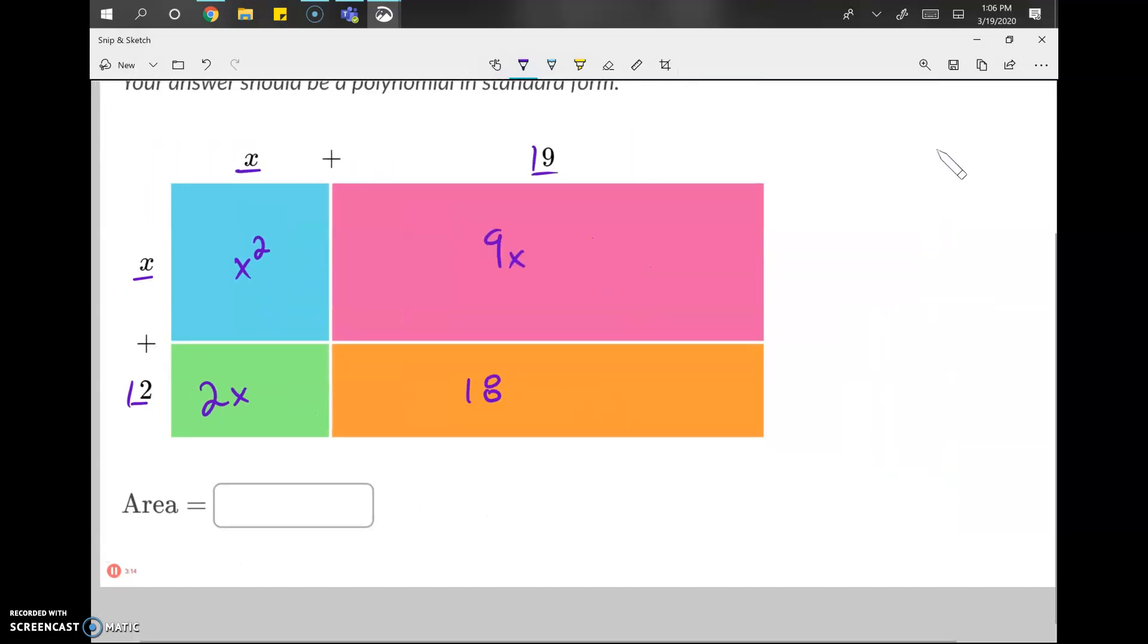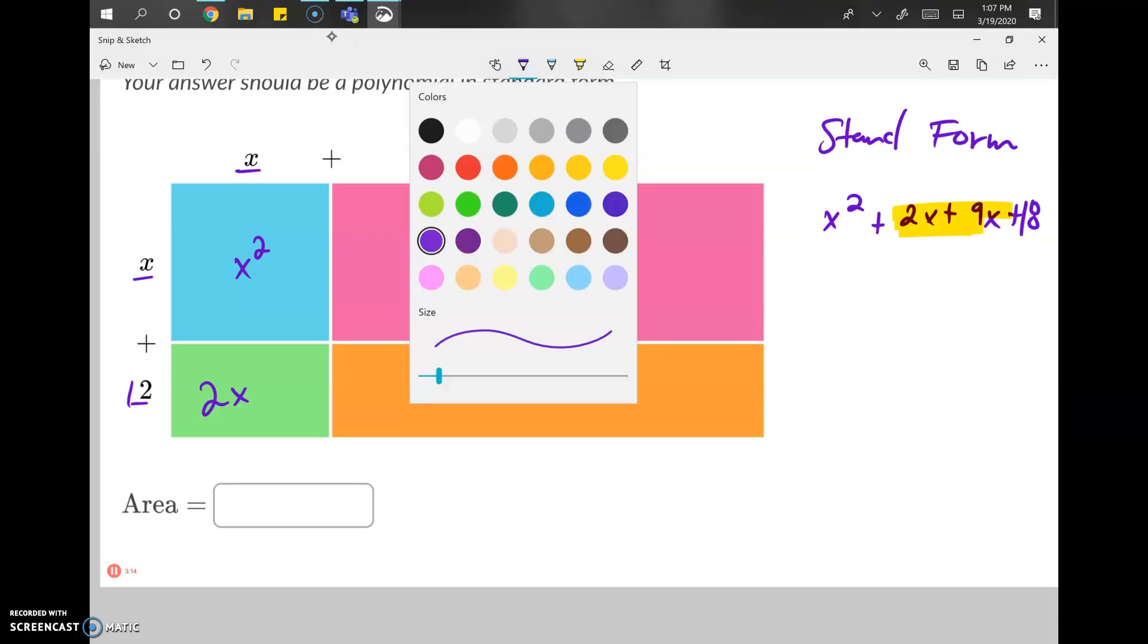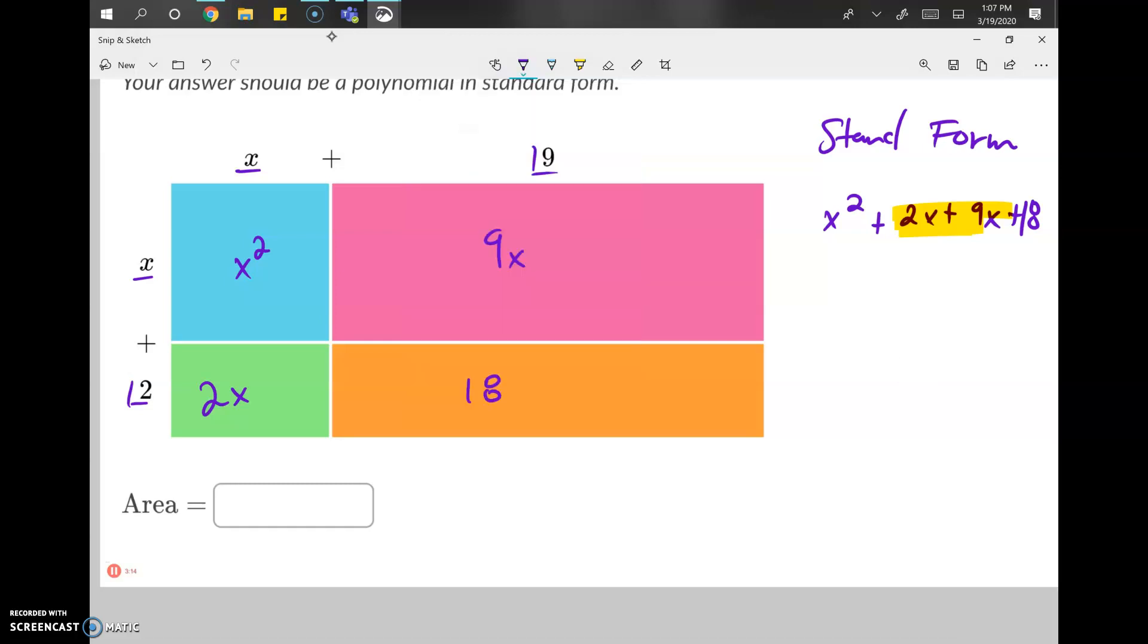We pull them out. We've got x squared plus 2x plus 9x plus 18. Remember, I'm going to write it in standard form. That's highest to lowest, right? So highest to lowest exponent. And two of those terms are alike. So if we've got two of something and nine of something, then we can just say, oh, we've got 11 of that thing. And that thing happens to be the x term. And the rest we can't combine, so it goes down.